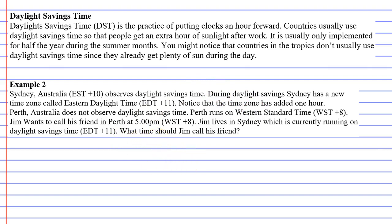It's usually useful to draw some type of a number line to help you work these things out. We're going to put 5 p.m. here. It says that Jim wants to call his friend in Perth at 5 p.m. Western Standard Time — he wants to call his friend so that when his friend picks up the phone, it's 5 o'clock in Perth. So, 5 p.m. Perth. Jim lives in Sydney.